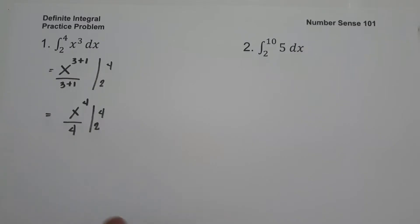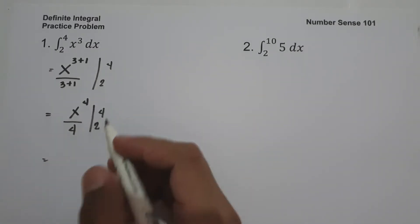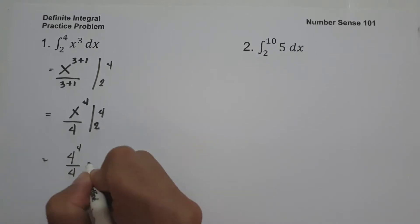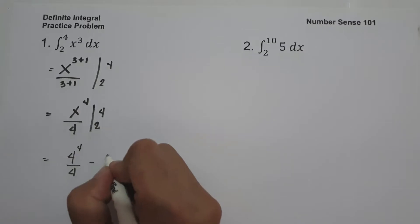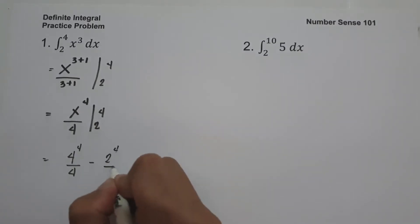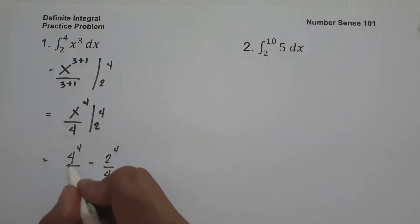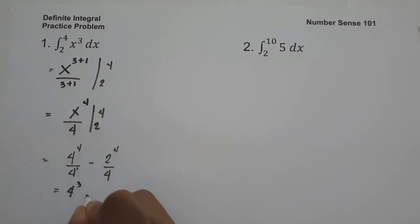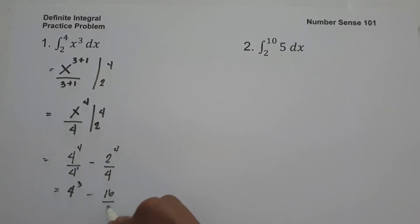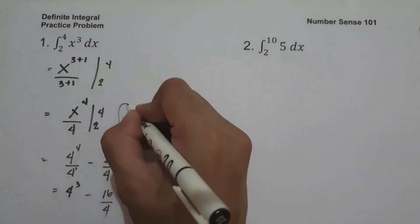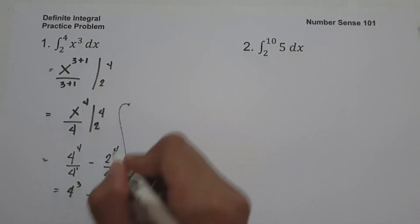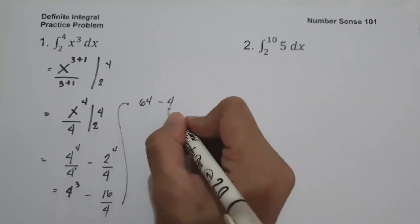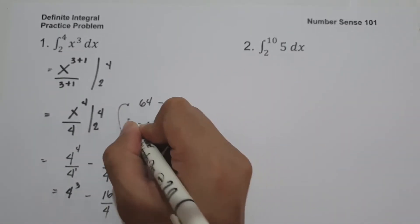We substitute the limits: 4 raised to the 4th over 4 minus 2 raised to the 4th over 4. For the first term, 4 raised to the 4th over 4 raised to the 1st gives 4 raised to 3, which is 64. For the second term, 2 raised to the 4th is 16, divided by 4, that is 4. So 64 minus 4 equals 60, and this is our answer.